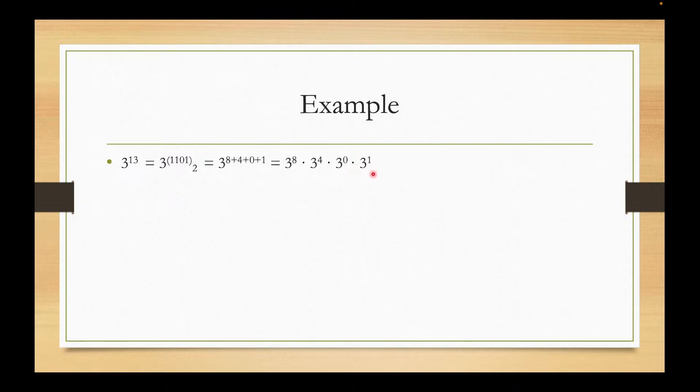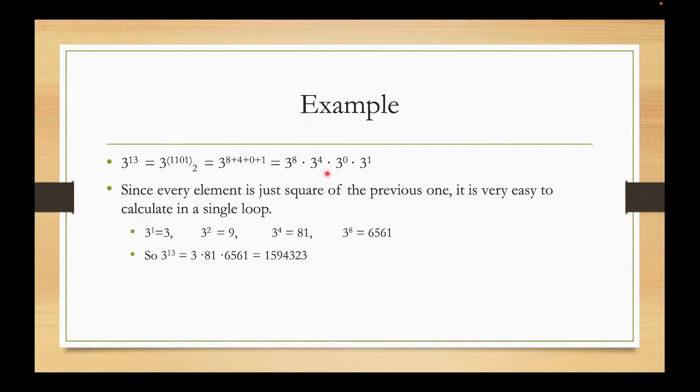3 to the power 8, 4, 0, and 1. So basically we can see that every element is just the square of the previous one. 3 to the power 8 is the square of 3 to the power 4, and 3 to the power 4 is the square of 3 to the power 2. Using this we will be able to calculate it. Instead of doing 13 operations, we are just doing 4 operations here, and that reduces our effort. It will save us time.